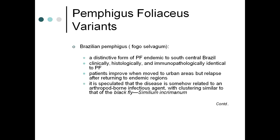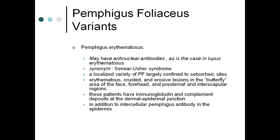Brazilian pemphigus (fogo selvagem) is an endemic type of pemphigus foliaceous, distinctive to south-central Brazil. It is identical to pemphigus foliaceous; patients improve when moved to urban areas but relapse after returning to endemic regions. It is speculated to be related to an arthropod-borne infectious agent, with clustering similar to that of the black fly Simulium incruens.